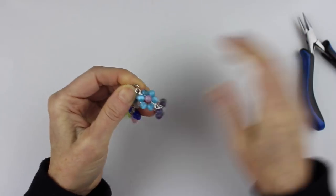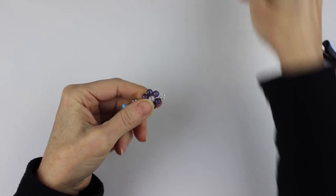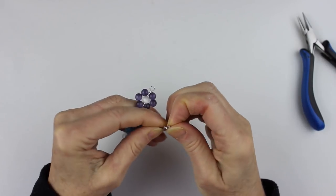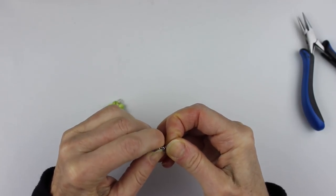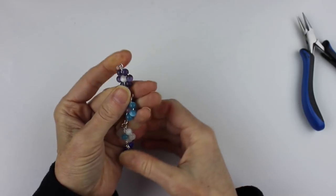And then what I use for the clasp is I have what I call a split ring, but you can actually use any kind of clasp that you want. Some people prefer the clasp that kind of just hook in together. So the split ring just goes on kind of like a key chain.